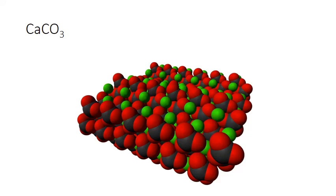For example, this is the space-filling model of the crystal lattice for the ionic compound calcium carbonate. The carbonate anion is a polyatomic — a molecule of one carbon and three oxygens that gained two electrons during formation, giving it a net −2 charge. That −2 charge allows it to form an ionic bond with a positively charged calcium ion. Each carbonate ion in the lattice is exactly the same, with one carbon and three oxygen atoms in the exact same arrangement.